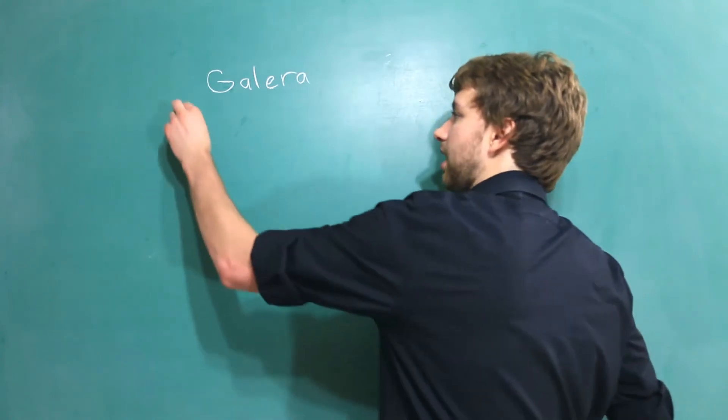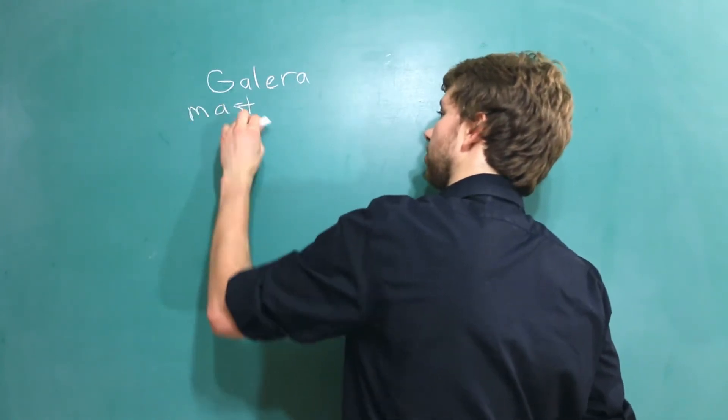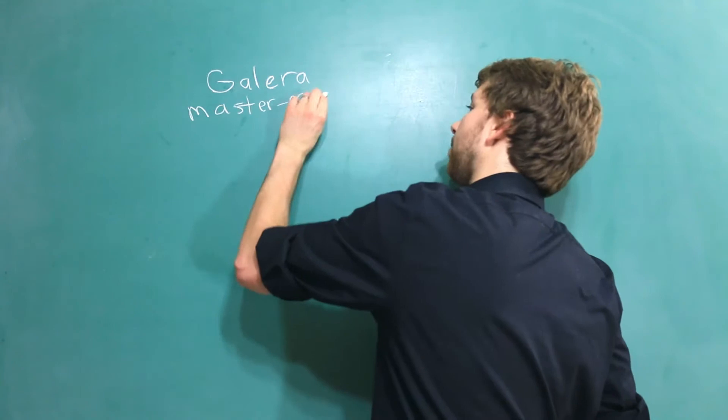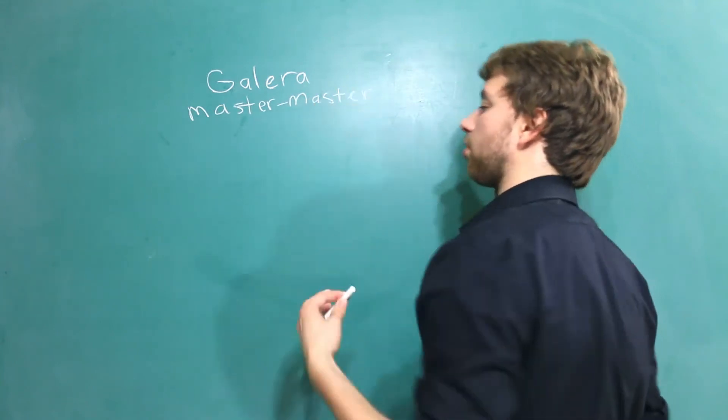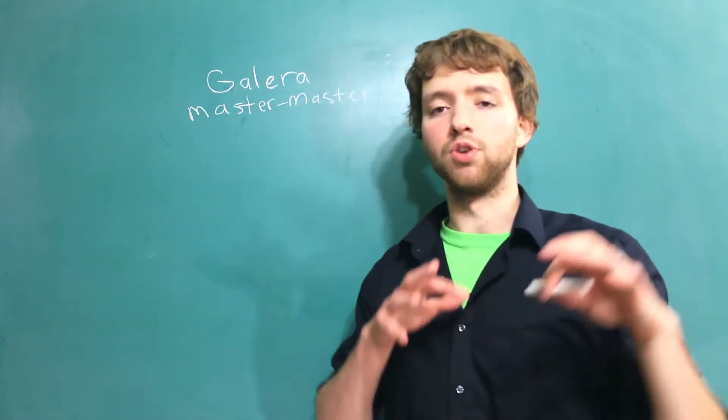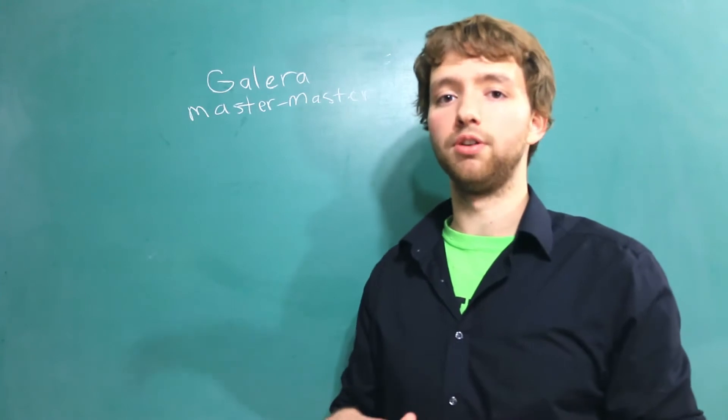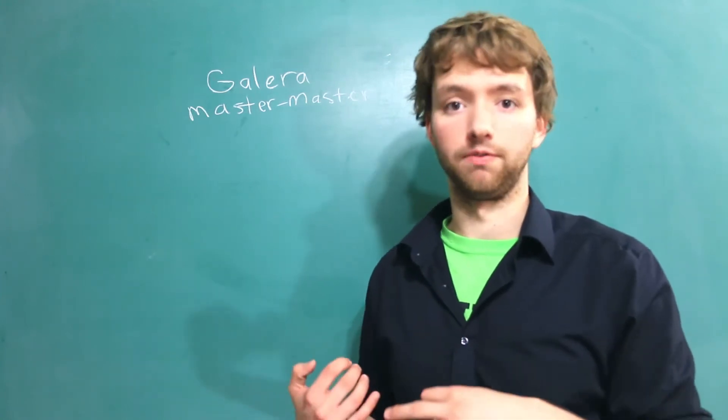So this is a master master infrastructure or topology I should say and what that means is that all of your nodes are at equal standing. You can write data to all of the nodes and you can read data from all of the nodes.